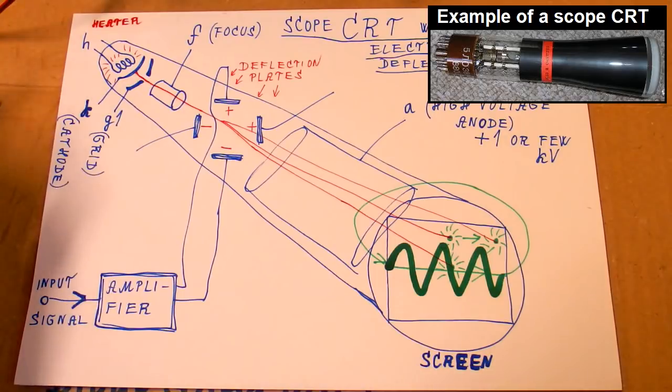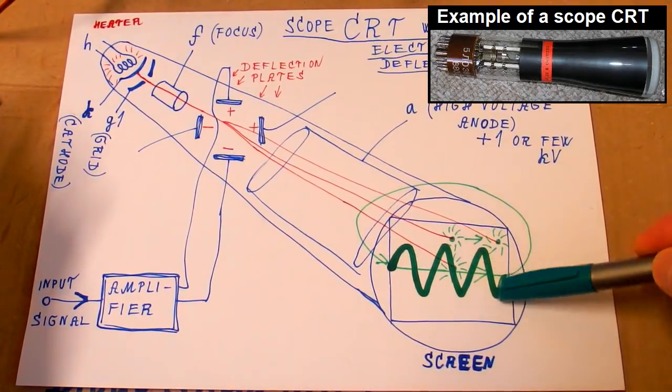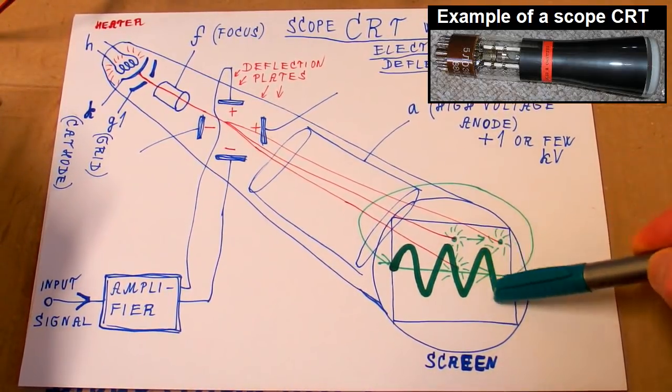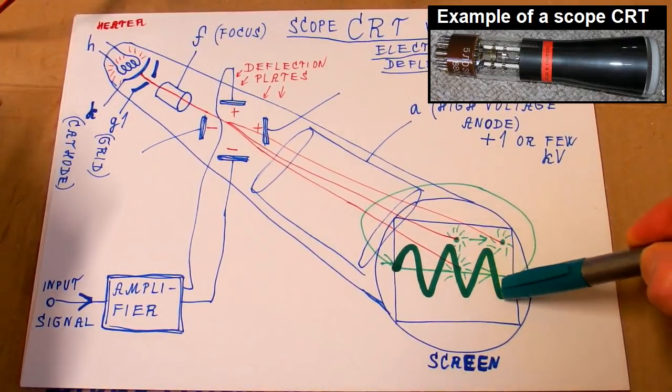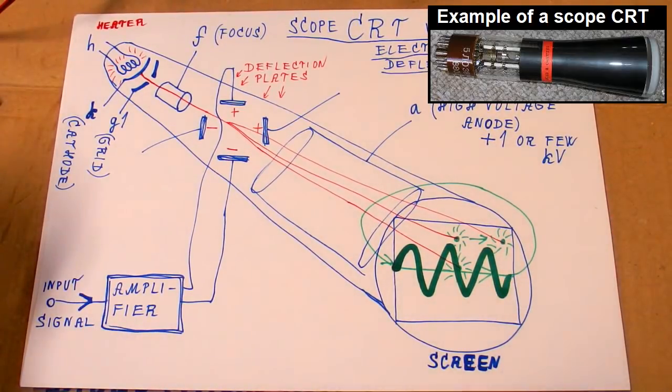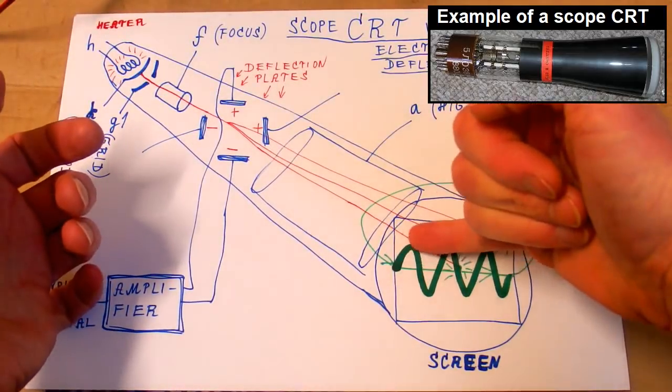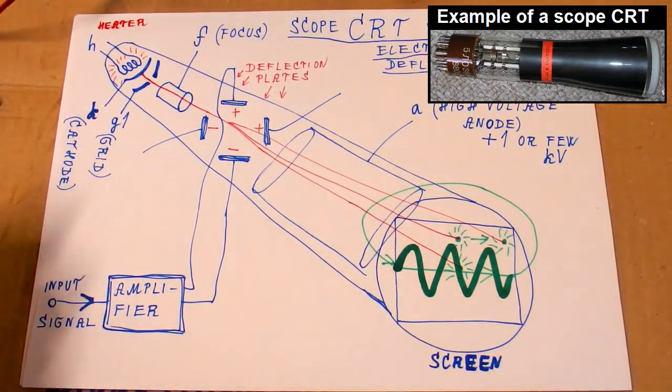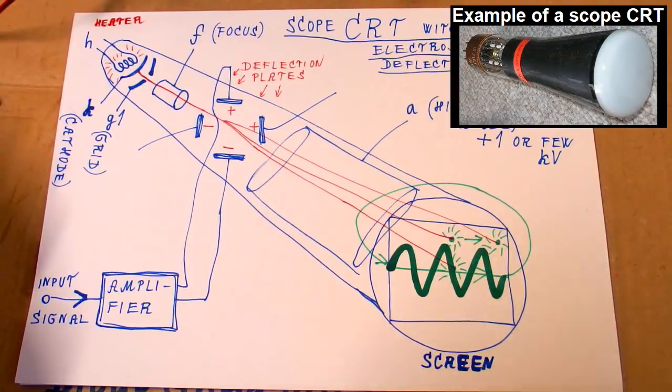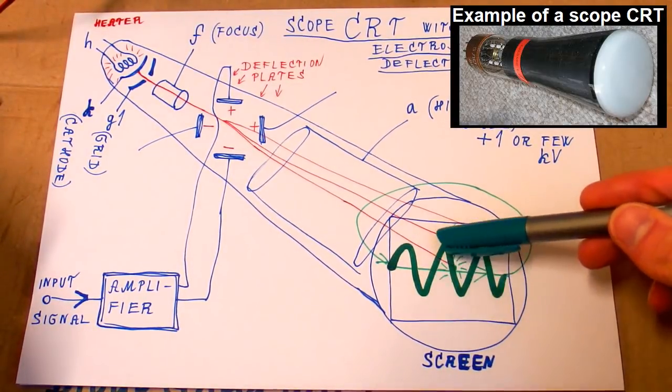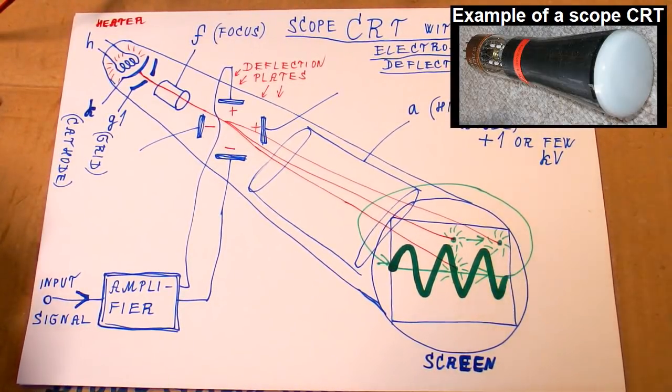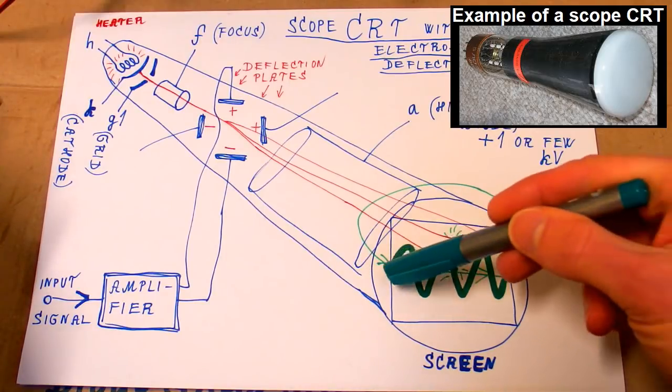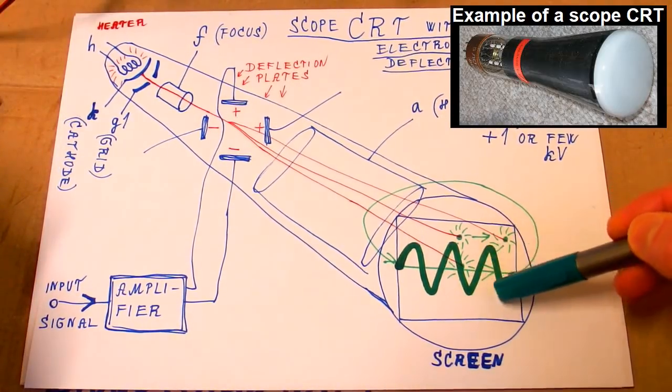And it happens very fast. It draws the line and again and again. And it happens so fast that you can't see it moving. You just see the entire trace on the screen. It uses the persistence of the screen and also the persistence of your vision. So instead of a moving point, you see the entire trace.